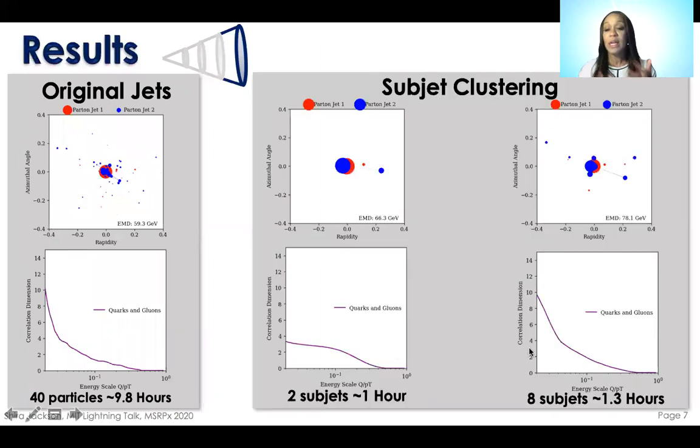One key feature of my data results is that we can approximate this jet with eight subjets and still preserve the original correlation dimension behavior.